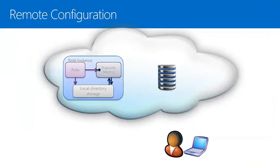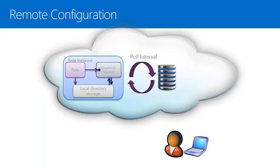After you have deployed a cloud service, you can remotely change the configuration of the diagnostics monitor. Once a diagnostics monitor is started, it will continuously poll storage for a special file that gives it its configuration. You can update this file locally on your machine either manually or using the diagnostics API, save it to the storage container, and the role will pick it up during the next polling interval and update itself.